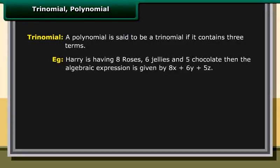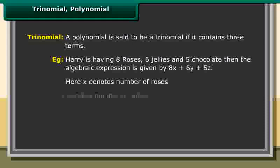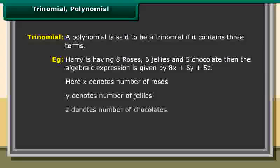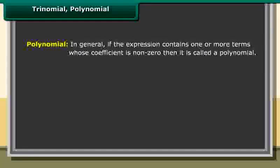Trinomial: A polynomial is said to be a trinomial if it contains three terms. Example: Harry has eight roses, six jellies, and five chocolates. The algebraic expression is 8x plus 6y plus 5z, where x denotes roses, y denotes jellies, and z denotes chocolates. 8x plus 6y plus 5z is a trinomial with three terms. Polynomial: In general, if an expression contains one or more terms whose coefficient is non-zero, it is called a polynomial.